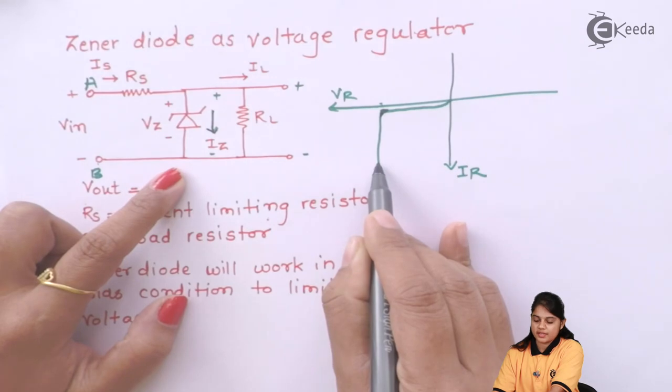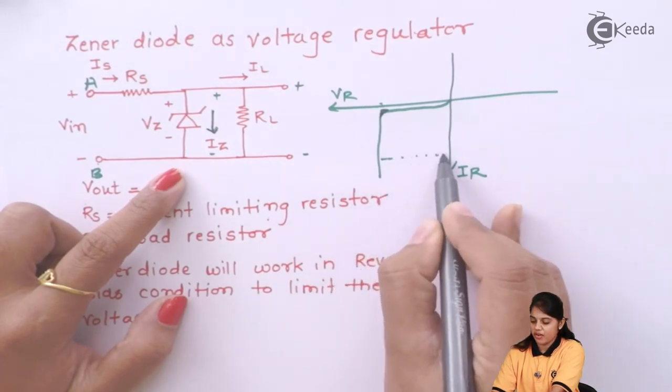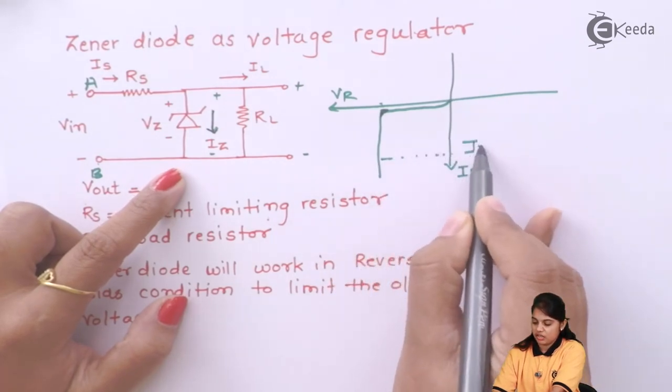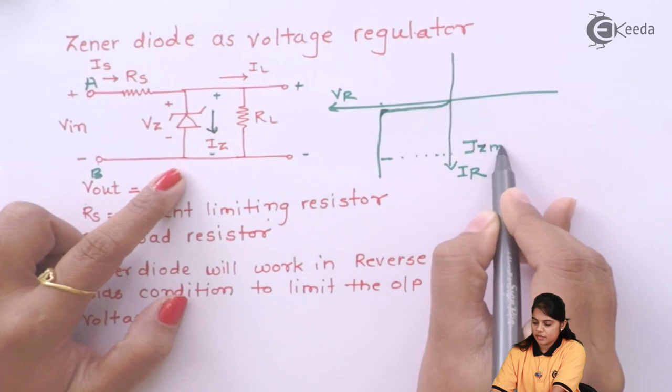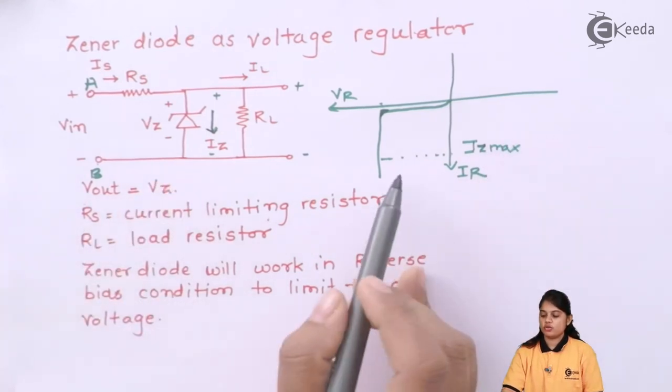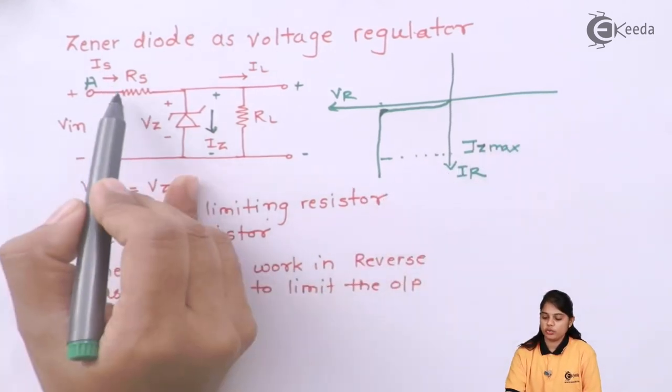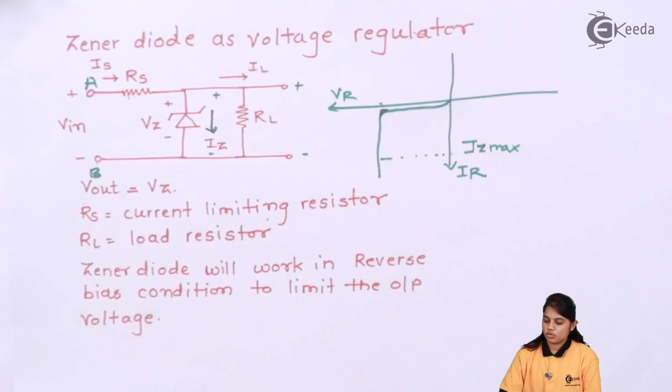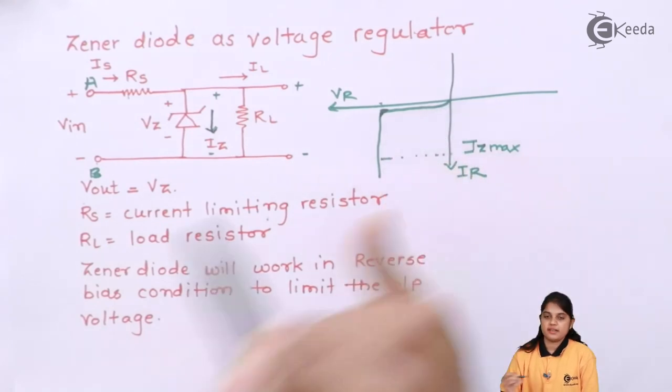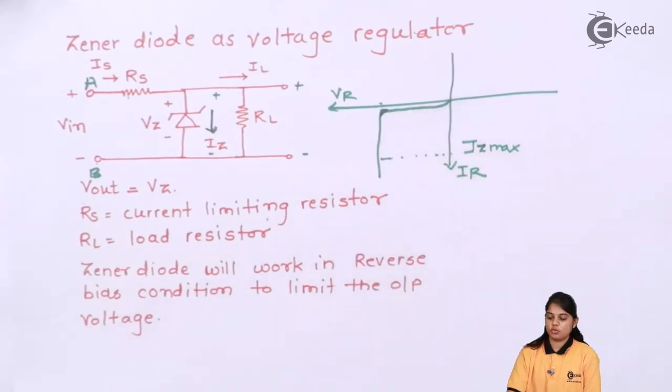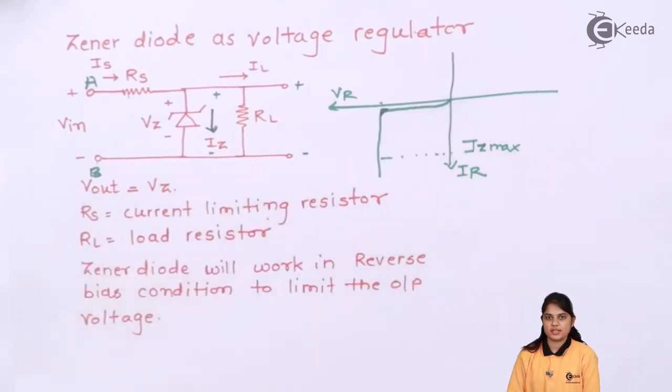You have to control this current somehow. For example, you have the specification given that is IZ max will be so and so. To limit that current, you need to connect the resistor. This characteristic can be utilized to design a voltage regulator circuit.